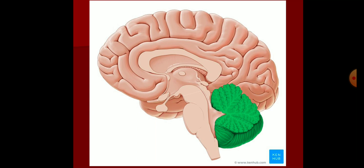The cerebellum lies behind the pons and medulla, separated from them by a cavity called the fourth ventricle. The cerebellum occupies the posterior cranial fossa. Above it, you find a fold of dura mater termed the tentorium cerebelli — a dural fold lying like a tent, separating the occipital lobes of the cerebrum from the cerebellum.